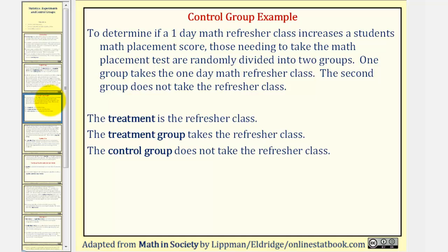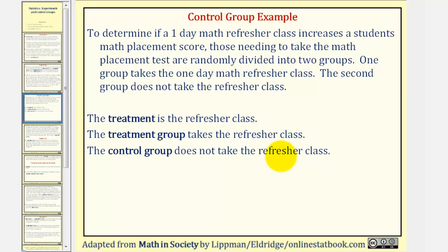Let's take a look at an example. To determine if a one-day math refresher class increases a student's math placement score, those needing to take the math placement test are randomly divided into two groups. One group takes the one-day math refresher class, and the second group does not. In this case, the treatment would be the refresher class, the treatment group is the group that takes the refresher class, and the control group is the group that does not take the refresher class.